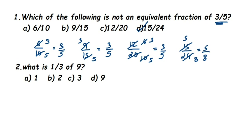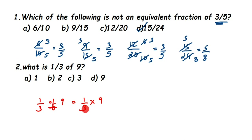The second question: what is one third of 9? So 1/3 of 9 means multiplication — 1/3 × 9. Cancel: 9 is in the numerator and 3 is in the denominator. 3×1=3, 3×3=9 — we're left with 1 and 3 in the numerator. 1×3=3, so the answer is 3. Option C is correct.